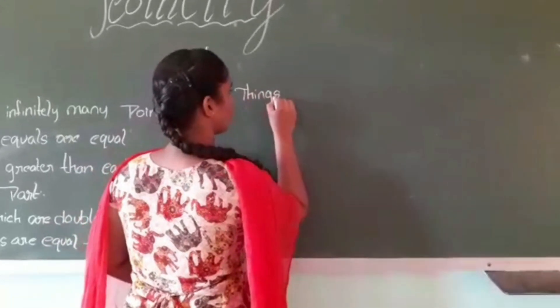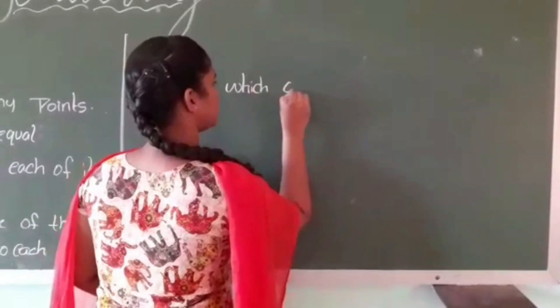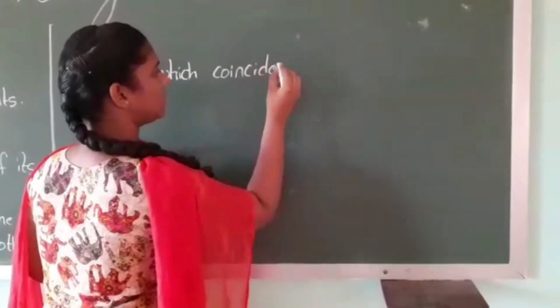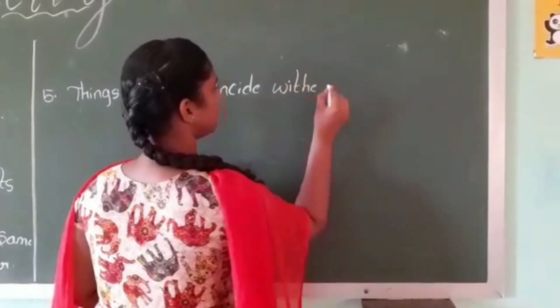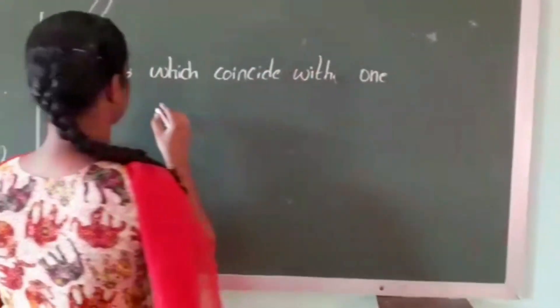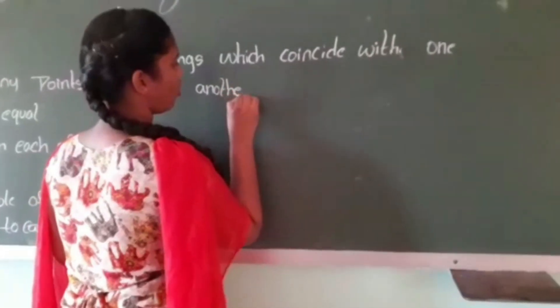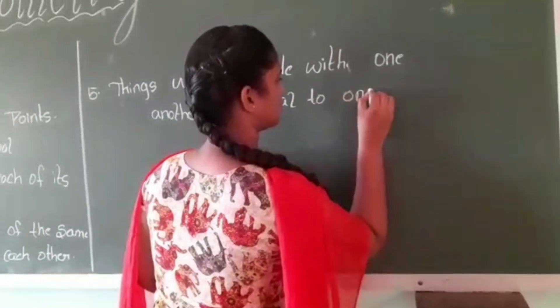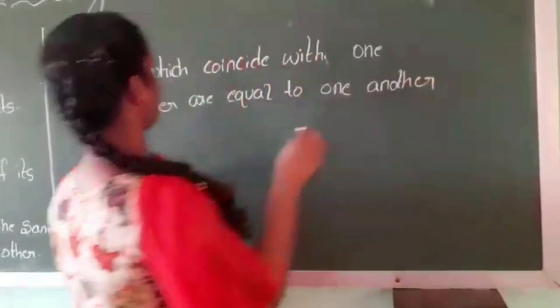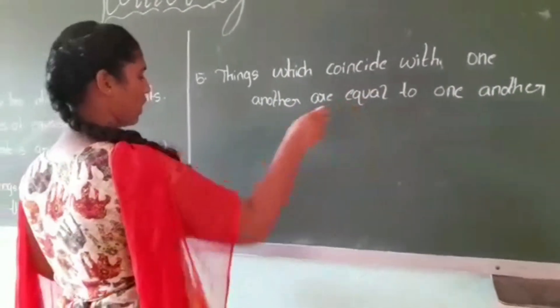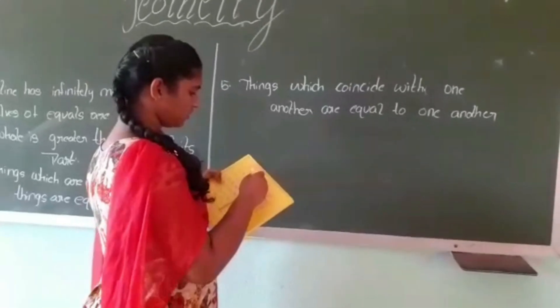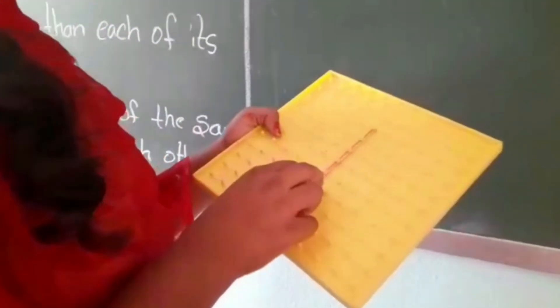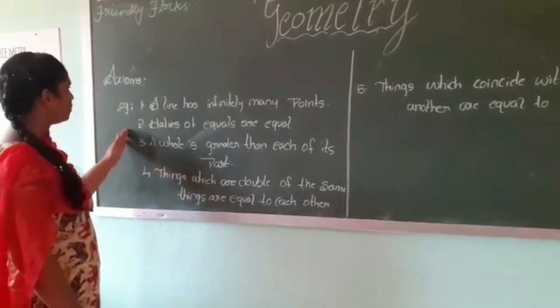Things which coincide with one another are equal to one another. By setting this rubber band with this, we can see that these both are equal to each other. These are the Euclidean axiom ideas.